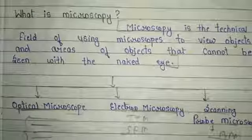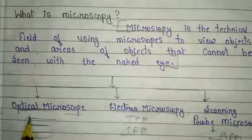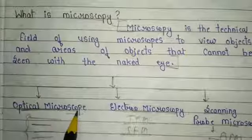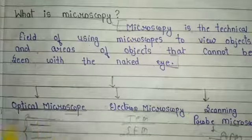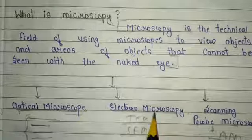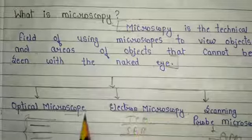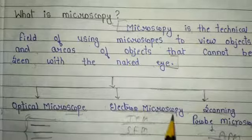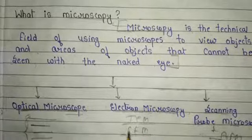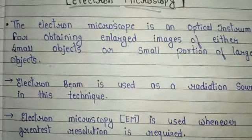Optical microscopy is very useful and generally used in our labs. But why do we use electron microscopy? Electron microscopy has high resolution power and high magnification power compared to optical microscopes. That is why we use electron microscopy — to know about our samples in detail.